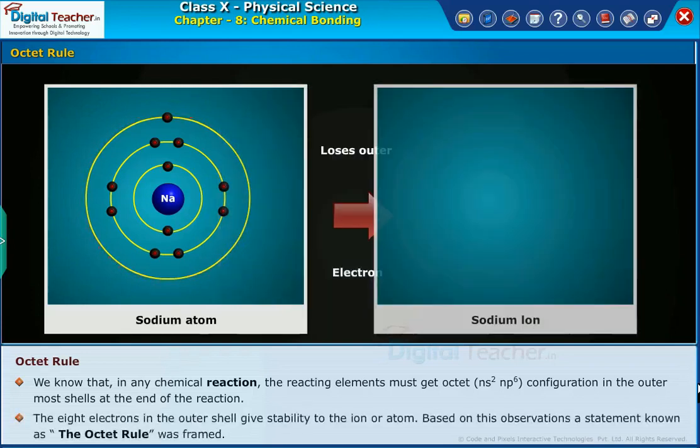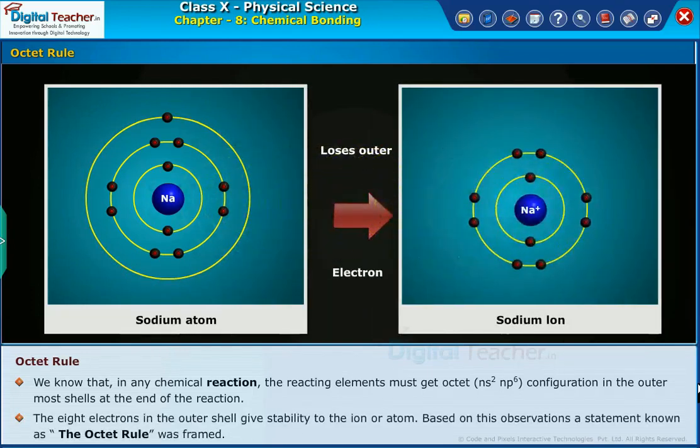The eight electrons in the outer shell give stability to the ion or atom. Based on this observation, a statement known as the Octet Rule was framed.